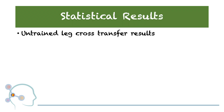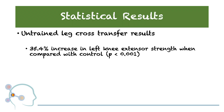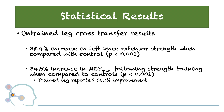Now let's look at our statistical results. The cross-transfer results reported a 35.4% increase in strength for the untrained knee extensors when compared to controls. Additionally, a 34.9% increase in MEP max following strength training when compared to controls was also observed. Motor evoked potentials, or MEPs, are commonly used as a measure to understand the execution and performance of movement and to quantify physiological change in corticospinal excitability of the motor system. When comparing the trained to the untrained leg, the untrained leg received more than half the MEP gain — around 61% — that was observed in the trained leg.